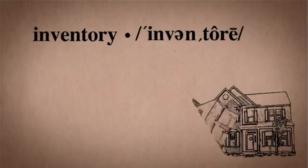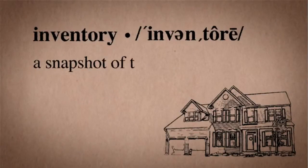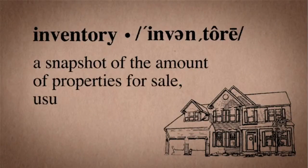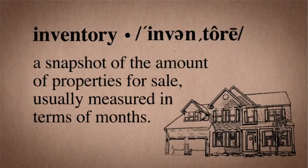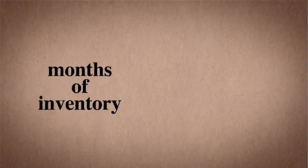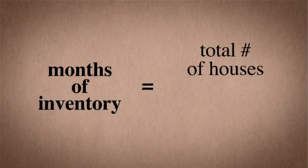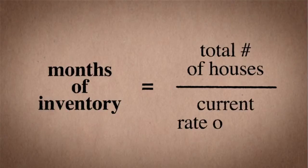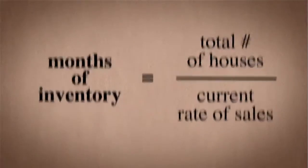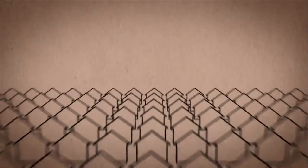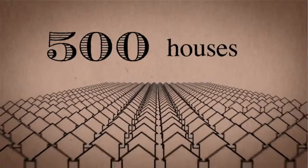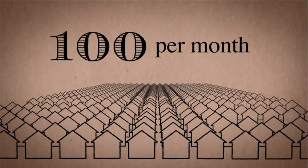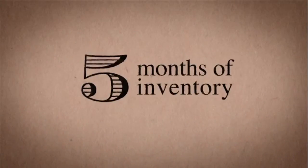Inventory is a snapshot of the amount of properties for sale, usually measured in terms of months. The number of months inventory is the total number of houses for sale divided by the current rate of sales. For example, if there are 500 houses on the market and houses are selling at a rate of 100 per month, then there is five months of inventory.